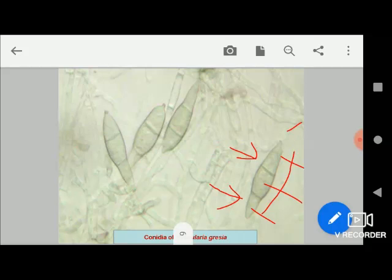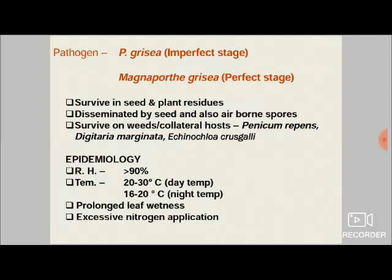The perfect stage of the fungus is Magnaporthe grisea, which produces perithecia structures that produce ascospores — the sexual spores. Pyricularia grisea is the imperfect stage; the perfect stage is Magnaporthe grisea. Regarding survival: the pathogen survives in seed and plant residues, mainly straw and stubbles remaining after cutting the rice. The pathogen is mainly disseminated by seed and also by airborne conidia. It also survives on weeds or collateral hosts such as Panicum repens, Digitaria marginata, and Echinochloa crus-galli.